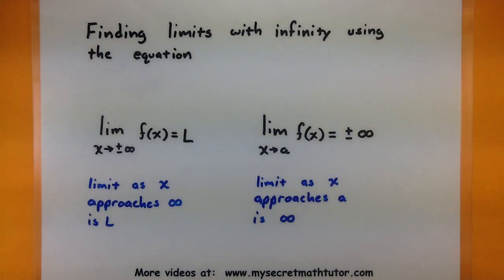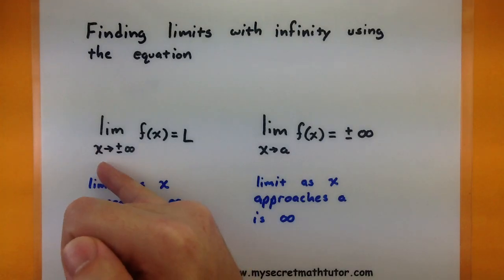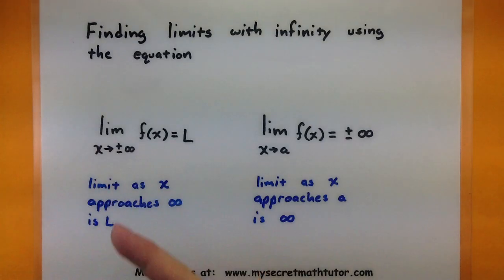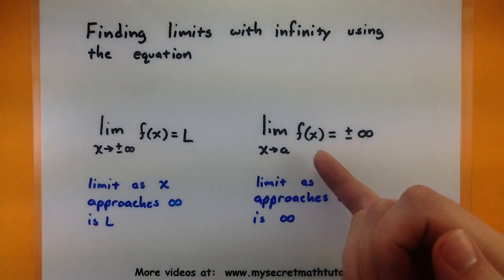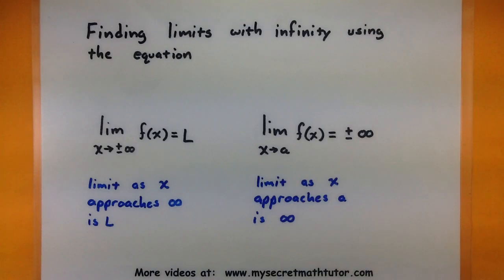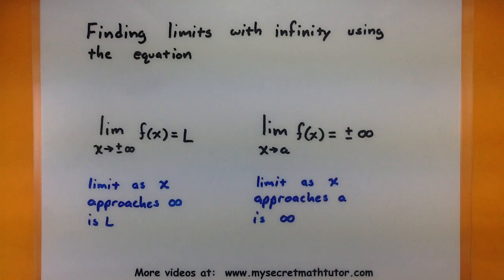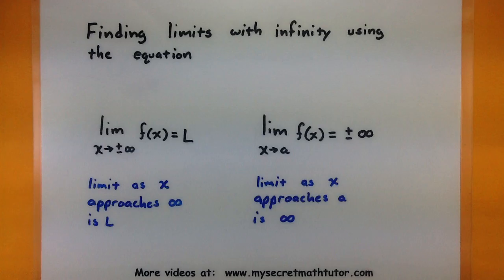We have two types of limits that involve infinity: one where x approaches infinity, and one where possibly the function approaches infinity. As we go through these examples, notice how we're picking out key differences and really what parts of the entire equation we're looking at.